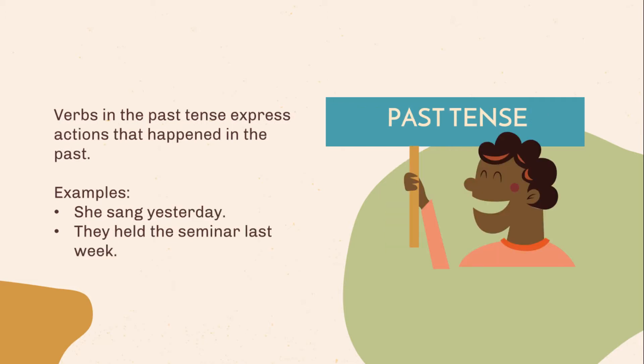Past tense. Verbs in the past tense express actions that happened in the past. Examples: She sang yesterday. They held the seminar last week. With past tense, a definite time marker is used.